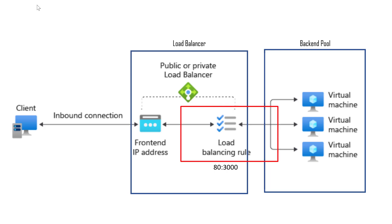The important thing to remember is the load balancing rule. The load balancing rule connects the IP address and port of the front end to the back end port. For example, port 80 of the front end IP address is connected to port 3000 of the virtual machine in the back end, so port 3000 on the VM must be open and ready to accept inbound connections.